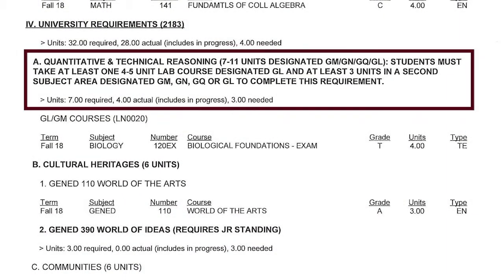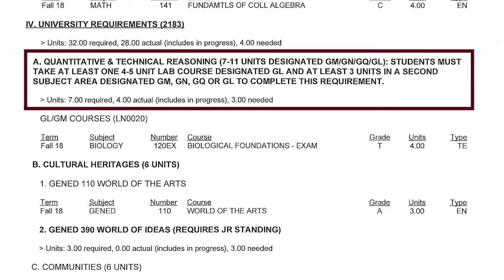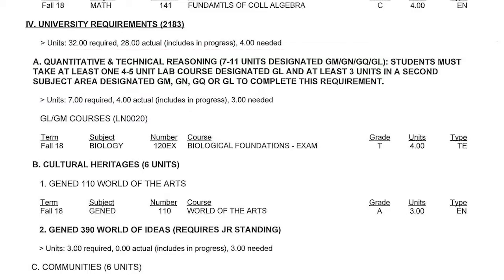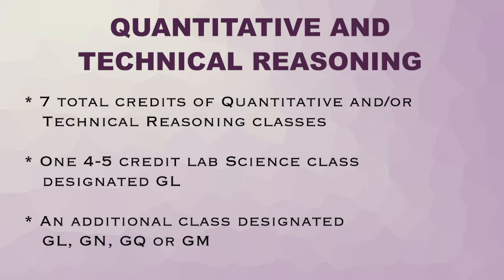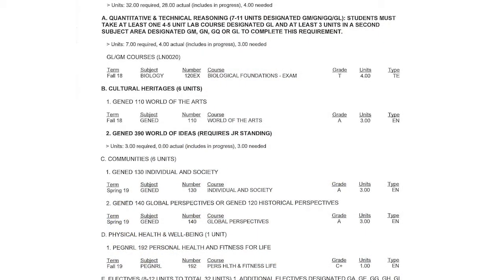First off, quantitative and technical reasoning — in plain English, this is the area for science and math courses. There are three requirements: one, you must have seven total credits of quantitative and/or technical reasoning classes; two, you must have one four- to five-credit lab science class designated GL; and finally, you must have an additional class designated GL, GN, GQ, or GM, and that second class must be in a different subject area than the first. If you don't like math, you can simply take two science classes to fulfill the requirement.